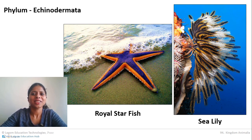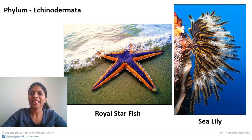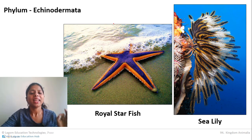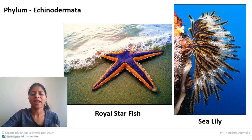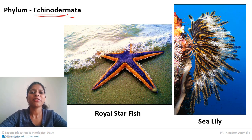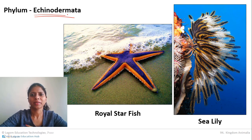The first and very important characteristic of Echinodermata is that they are always marine — they do not stay in fresh water and they are not terrestrial. Each and every animal included in Echinodermata is a marine animal. This is a favorite question for examiners: which phylum includes exclusively marine organisms? The answer is Echinodermata.